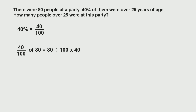So to find 40 hundredths of 80: take the 80, divide by 100, and times by 40. Alternatively, we can do 40 divided by 100, which gives us 0.4 as a decimal, then times by 80. Both methods give us the same answer: 32 people. So whether you convert 40% into the fraction 40 over 100 or the decimal 0.4, multiplying by the total gives you the value.